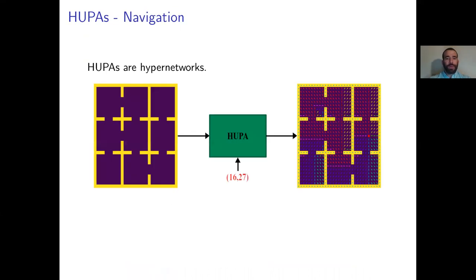HUPAS are hypernetworks. That means that they generate other neural networks. In the context of a simple navigation task, a HUPAS takes in a map of a space represented by images and generates a small policy network that can navigate the agent to any goal from any starting state.